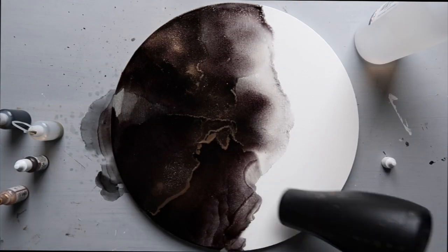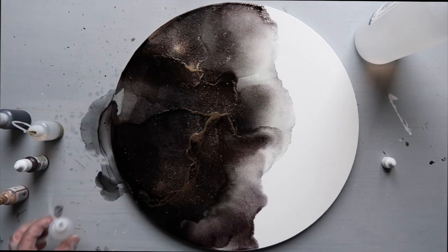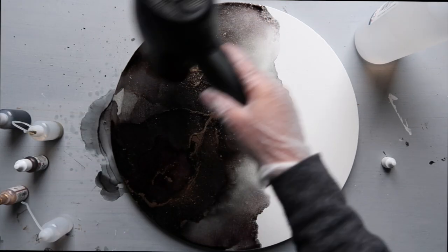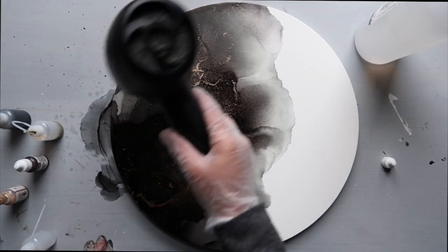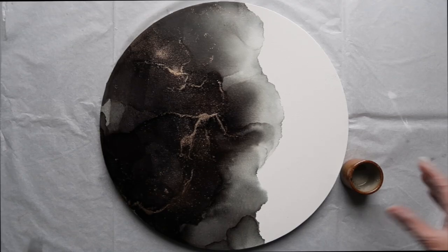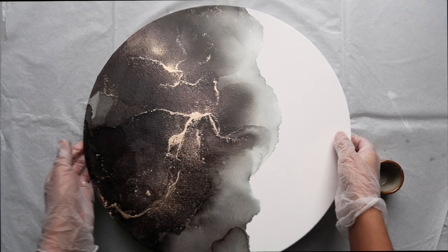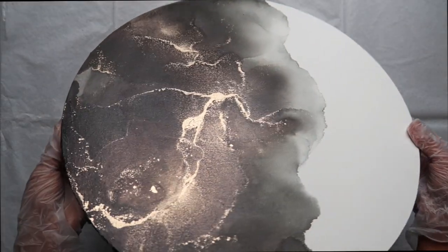And as you can see, it's creating these amazing patterns and the gold is becoming more vibrant as it goes to the top and the black dries up. And it just looks amazing. I just love this part of the process where you get to move the ink around with your hair dryer.